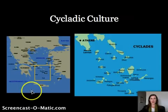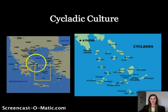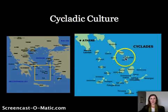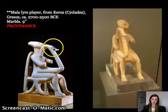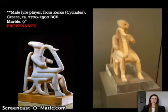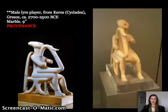Beginning with the Cycladic culture, we focus on these islands — like Paros and Syros — which you can see as we zoom in. The types of sculptures we see in the Cycladic culture tend to look like this. This is our key work: a male lyre player, a man playing a harp-like musical instrument. You can see a little duckbill suggesting a kind of bird head, suggesting the kind of music being played. The figures are very geometric from this period.